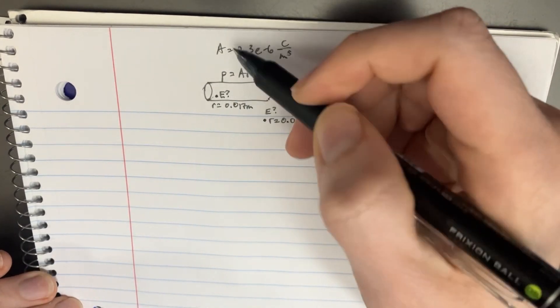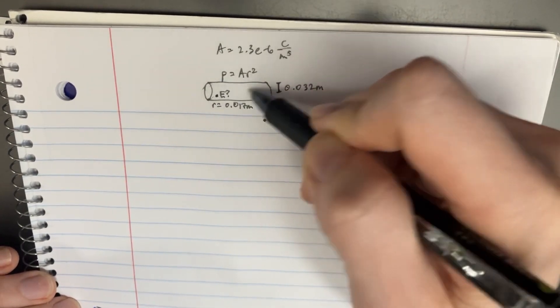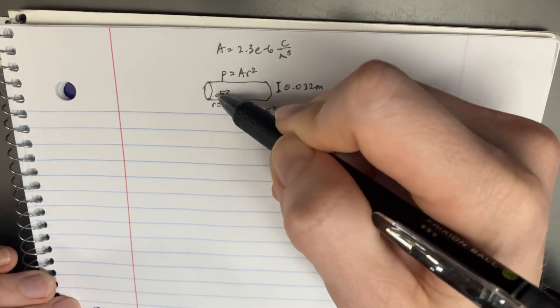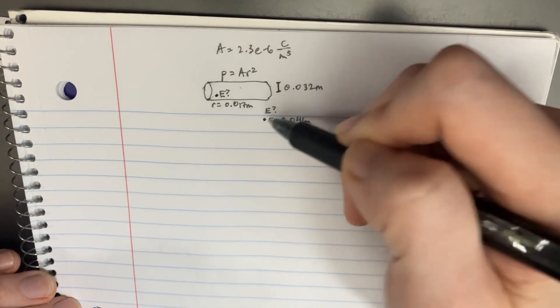And we're trying to find the electric field at this particular radius inside of the cylinder. And that's really important. This is going to change our answers, our formula for what we're going to do for when it's outside of the cylinder as well.